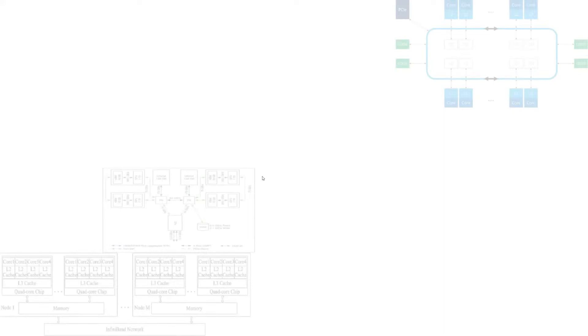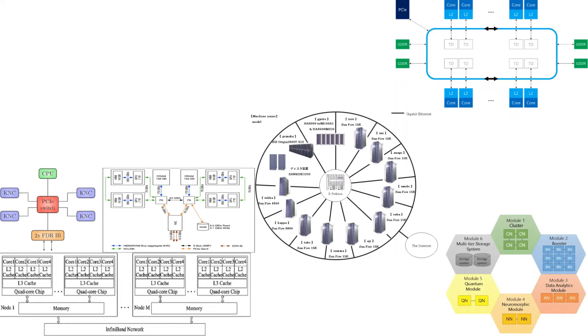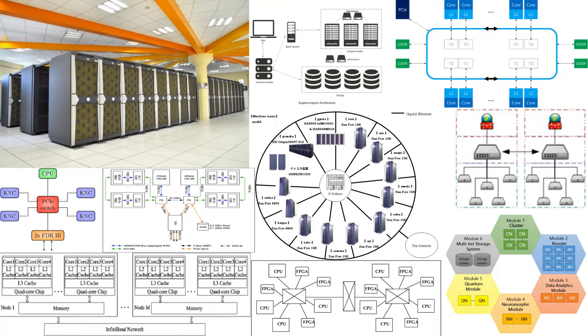Architecture. Supercomputer architecture has taken dynamic turns since early systems were introduced in the 1960s. Early supercomputer architecture, created by Seymour Cray, relied on compact creative design and local memory to achieve superior performance. However, the supercomputers of the 1970s used only a few processors, and in the 1990s, machines with thousands of processors were introduced.